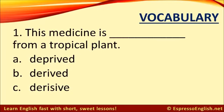Number one. This medicine is... from a tropical plant. A. Deprived. B. Derived. Or C. Derisive. The correct answer is B. Derived. This medicine is derived from a tropical plant. If something is derived from something else, it means it came from there — it originated there.